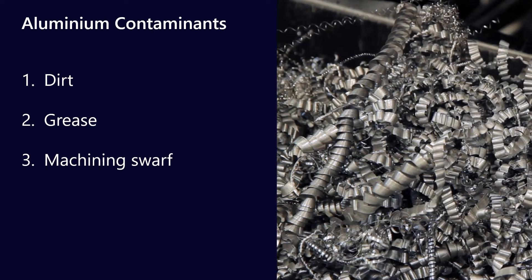Also, machining swarf. We might not necessarily think of this as a contaminant, but when your gearbox, transmission, final drive, or engine is produced, there's a certain amount of machining that goes into it. If you receive a new part, the reason we recommend doing a system flush is because there could be residual machining swarf contained within the oil reservoir — for example, leftover remnants from the construction of the piston. As this material circulates around it will break down into smaller components and eventually show up as wear metals.